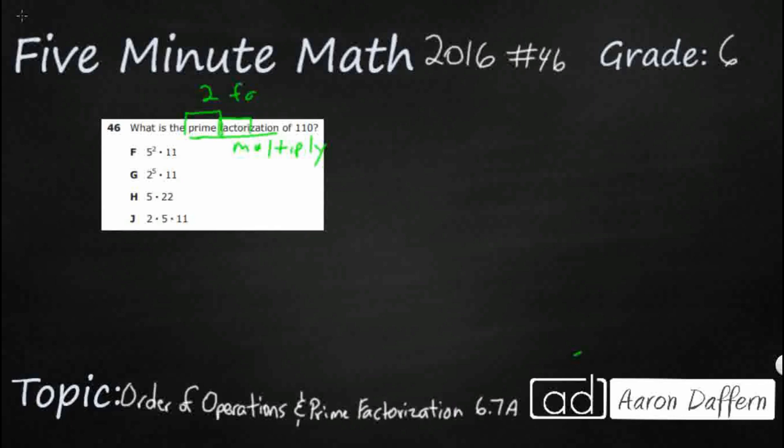So prime numbers only have two factors, one and itself. So a perfect example would be two. Two is prime because the only way to get two is one times two or two times one. Three is prime because the only way to get to three is one times three. Four is not prime because you can get one times four. You can always do one times itself, but you can also do two times two. So that would make it composite.